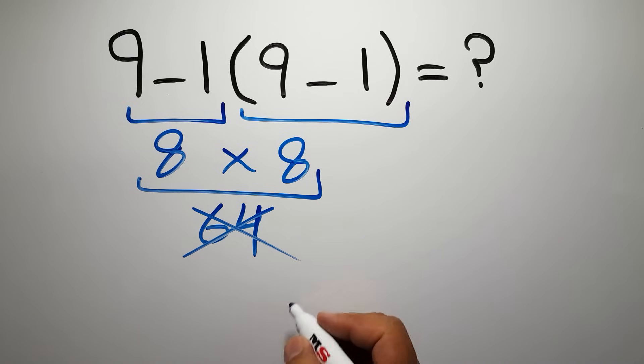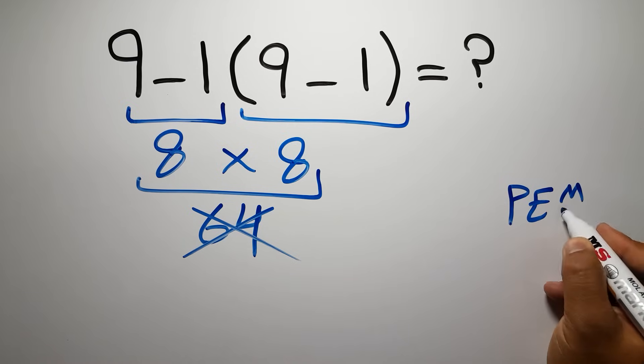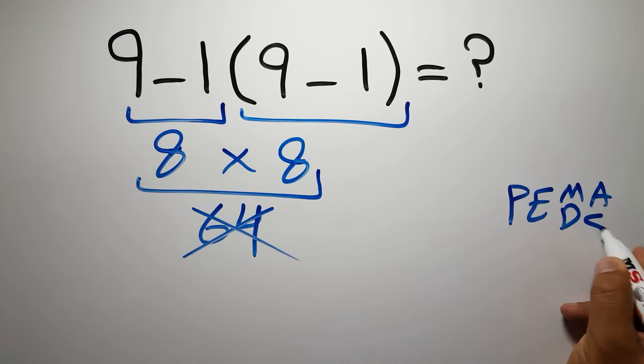Because according to the order of operations, first we have to do parentheses, then exponents, then multiplication or division, and finally addition or subtraction.